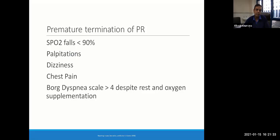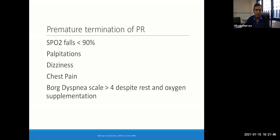Since these patients are still recovering from underlying COVID-19 disease, certain events indicate premature termination of rehab sessions. These include saturation dropping below 90% — particularly if there is concomitant pulmonary hypertension — palpitations, dizziness, chest pain, or increasing Borg dyspnea scale above 4. If the patient is not tolerating the rehab session, it is wiser to stop, terminate, and reassess the patient.